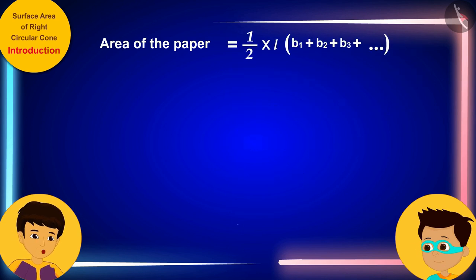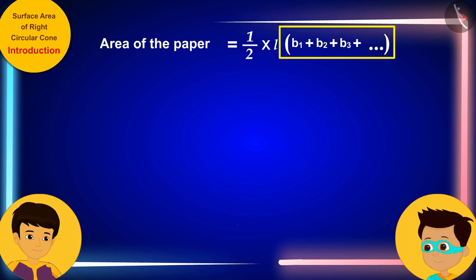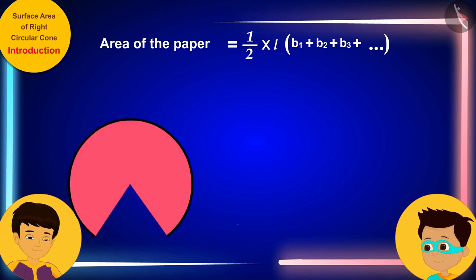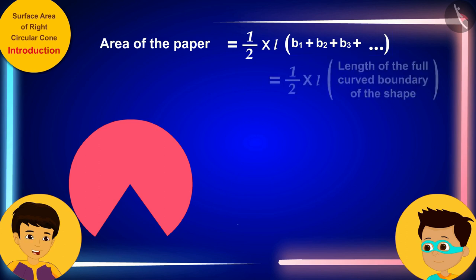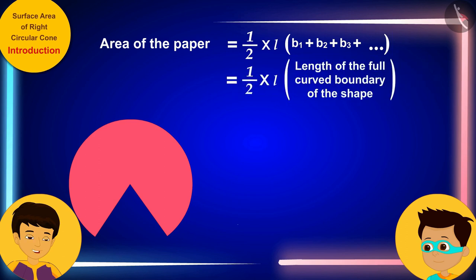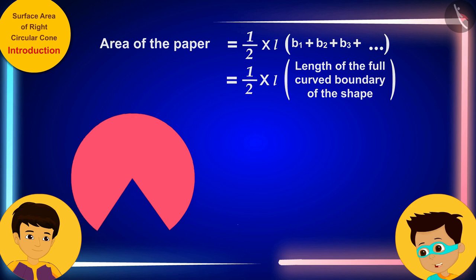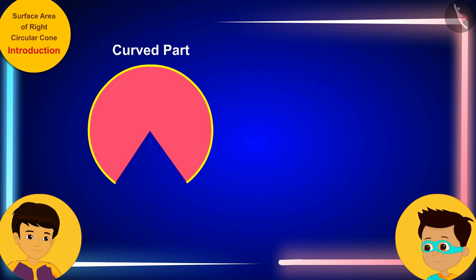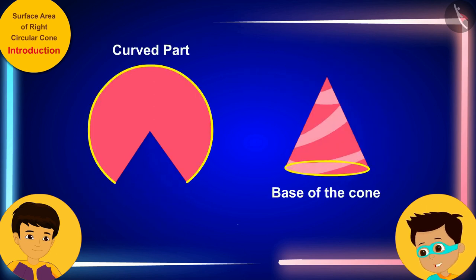But Thomas, B1, B2, B3, etc. together make up the outer part of this shape. So, the sum of all these will be equal to the length of the curved boundary of this shape. That's absolutely right! And this curved part forms the base of the cone.